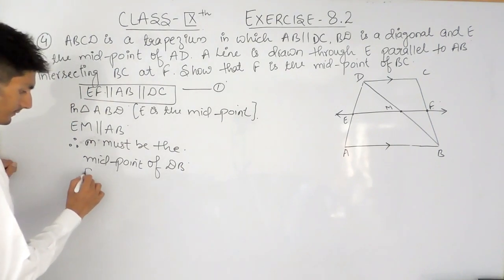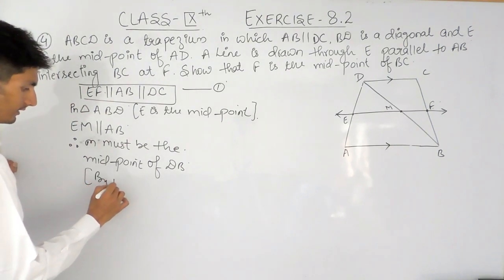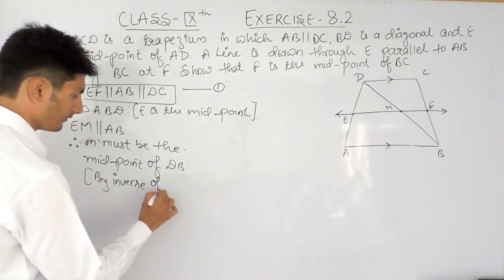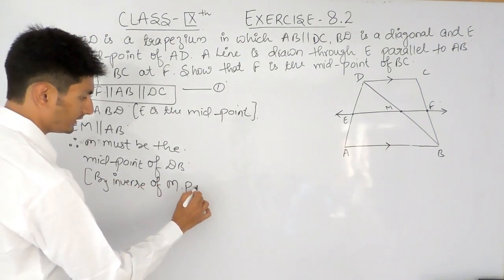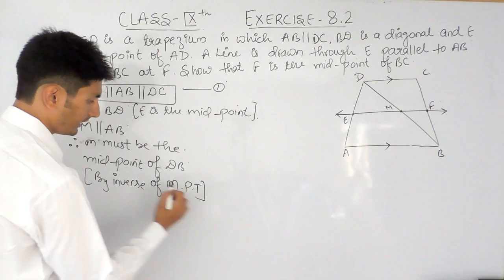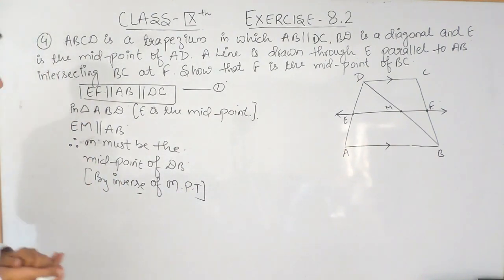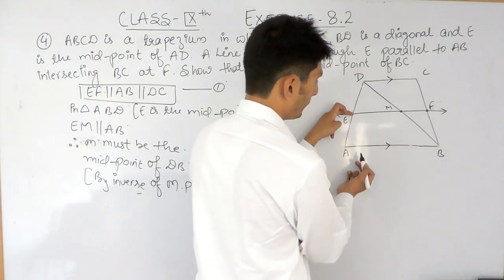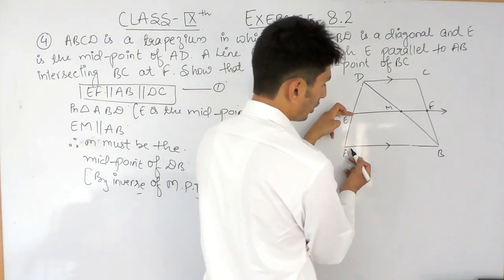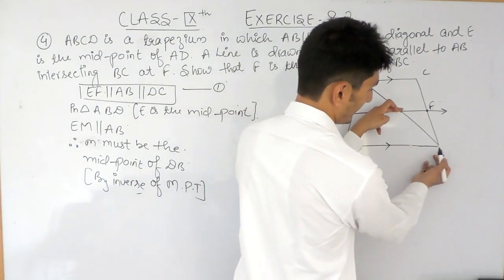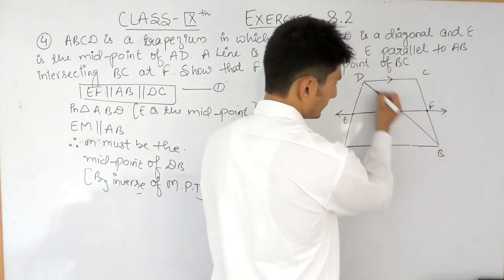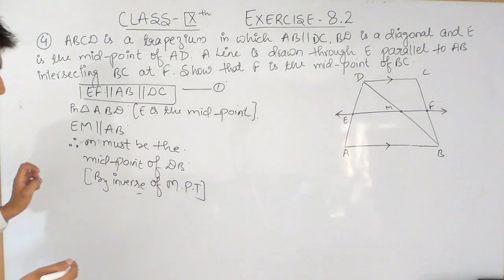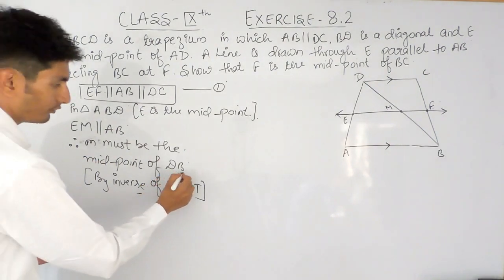Therefore M must be the midpoint of side DB. This is by the inverse of the midpoint theorem, which states that in a triangle, if from the midpoint of a side we draw a line parallel to the second side, it must divide the third side at its midpoint. So M is the midpoint of DB — this we have proved.